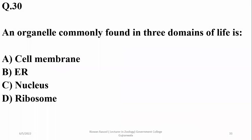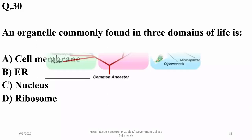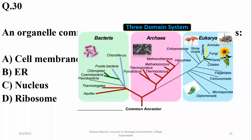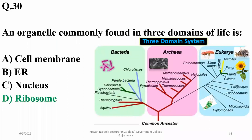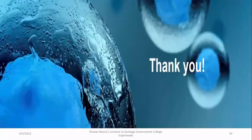Question 30: The organelle commonly found in all three domains of life — archaea, eubacteria, and eukarya — is the ribosome. That is why ribosome is called the universal organelle. Thank you for listening. The remaining series of tests will be uploaded soon. Allah Hafiz.